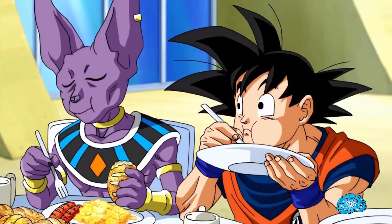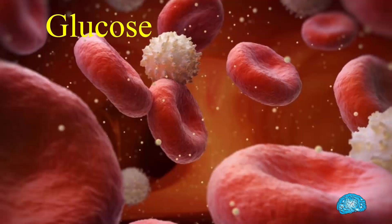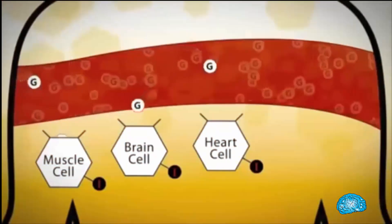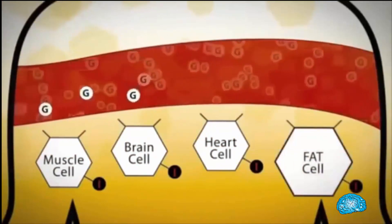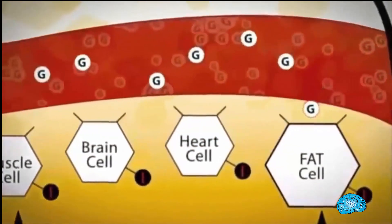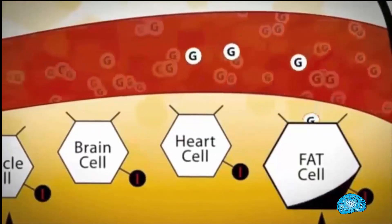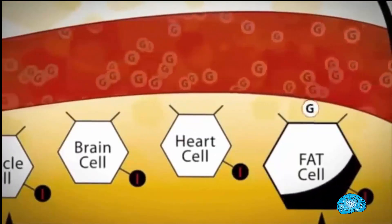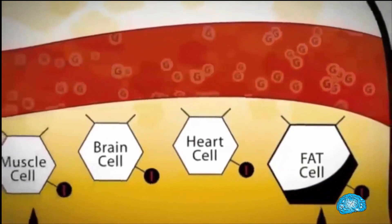Sometimes, we eat more than we need or there is more glucose present in our blood than the cells need. Muscle cells or brain cells never take in more glucose than they need. So the excess glucose is stored in fat cells. These stored glucose is converted into fat, medically called free fatty acids.